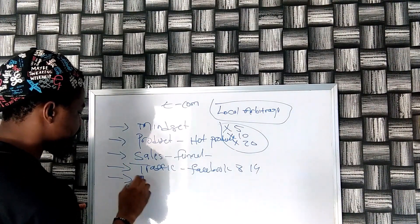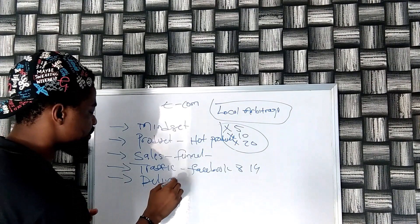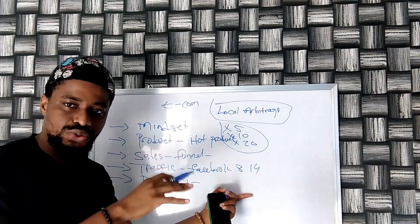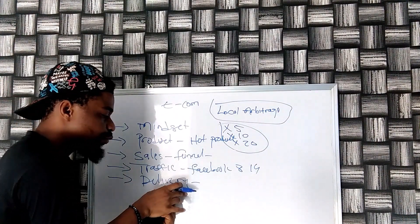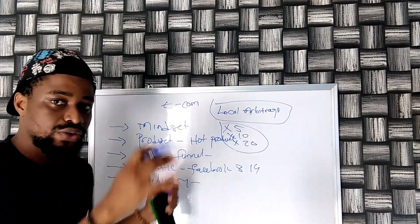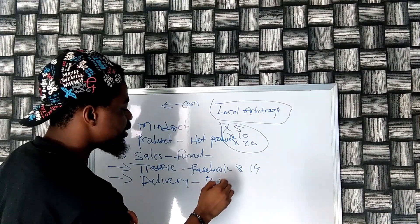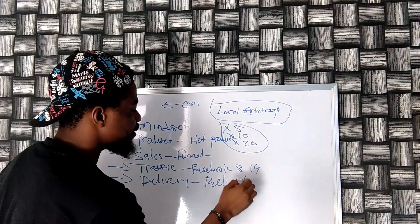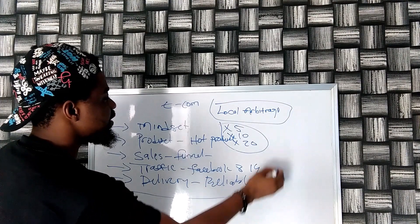Or the distribution system. This is how we deliver these products to the buyers because this is how we are going to make the money. If they don't get this product delivered, we are not going to make any money, so we must have a reliable delivery system.